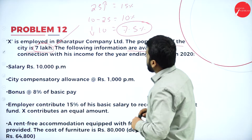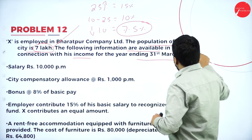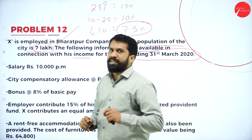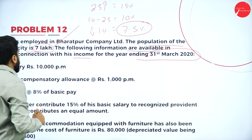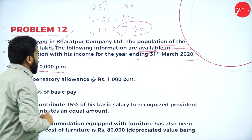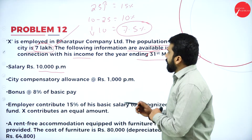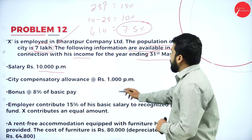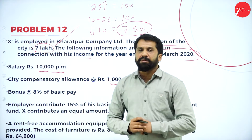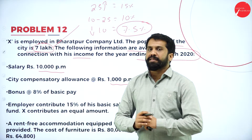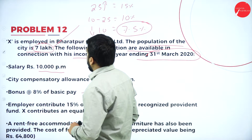The following information is available in connection with his income for the year ending 31st March 2020. Salary is rupees 10,000 per month. City Compensation Allowance (CCA) is 1,000 per month — just multiply by 12. Then bonus — it is 8% of basic pay.